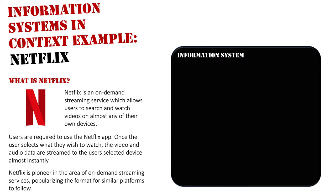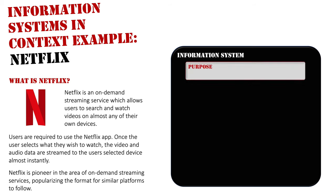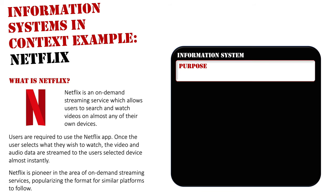Here is the Netflix information system. It's bare at the moment but we're going to be adding to it. We'll firstly look at the purpose of this system: to provide a service to users which allows them to browse, select, and watch videos instantly through streaming the media over the internet directly to the user's own device. The data is streamed over the internet — streaming means it buffers and loads the video as it is downloading — and it is on the user's own device, giving them freedom of choice.